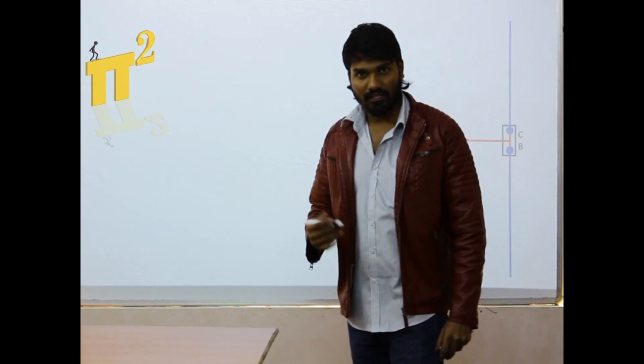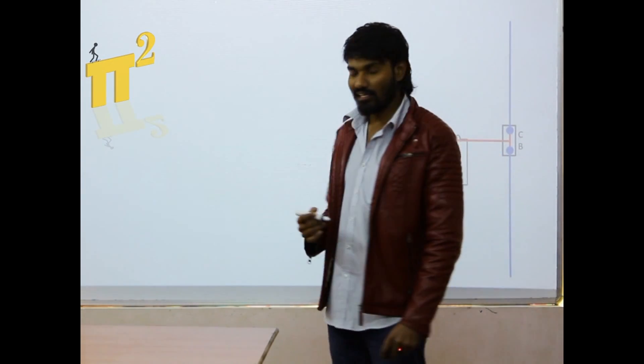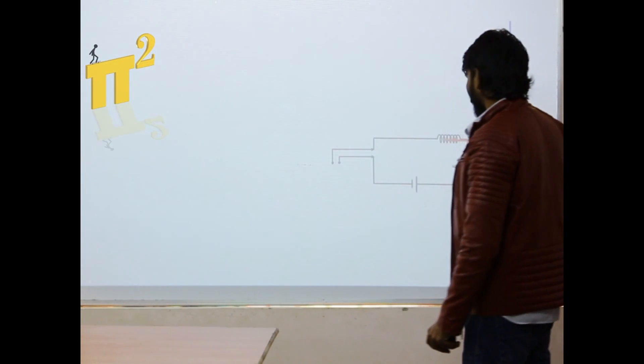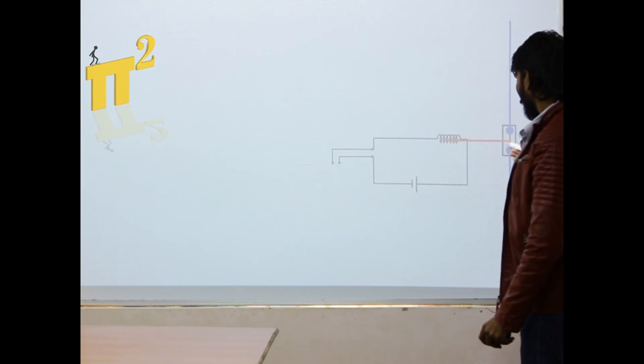Now we know when there is an overcurrent, my circuit should be opened through a circuit breaker.